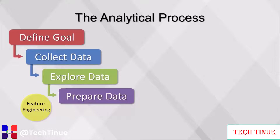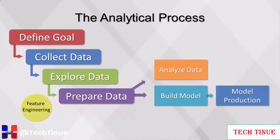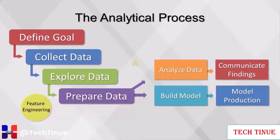The last two steps in the analytical process are to build models and then to put these models into production. A model is a type of mathematical equation that describes relationships among variables in a data set, often for the purpose of predicting an outcome. By putting a model in production, an automated decision can be made when new data is observed. In some cases, models are not the goal of a project; rather, the goal is to analyze data and communicate the findings in an analytical report, presentation, or dashboard.